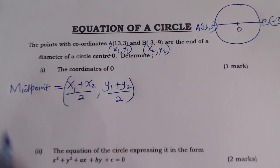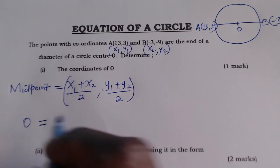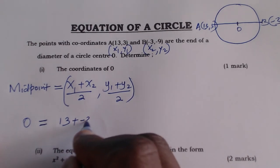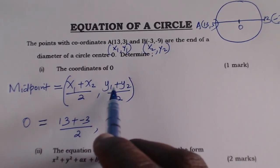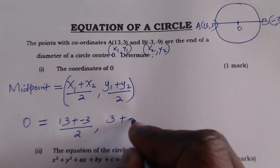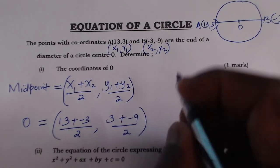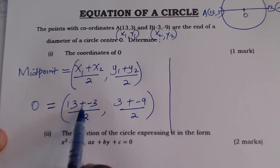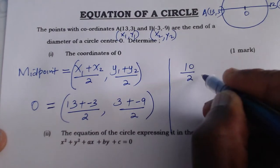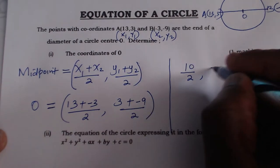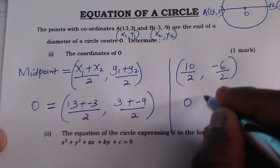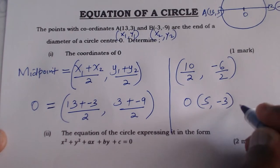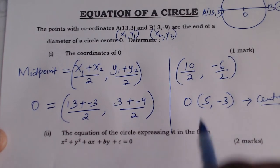The coordinates of point O are given by: x = (13 + (-3)) / 2, y = (3 + (-9)) / 2. So 13 minus 3 = 10, divided by 2; and 3 minus 9 = -6, divided by 2. Therefore the coordinates of center O are (5, -3).